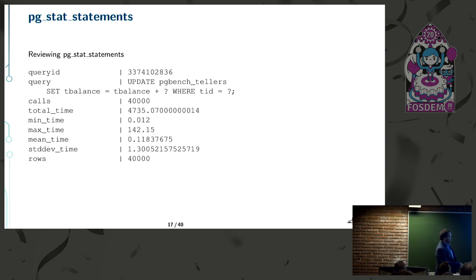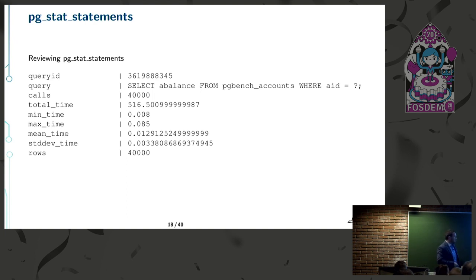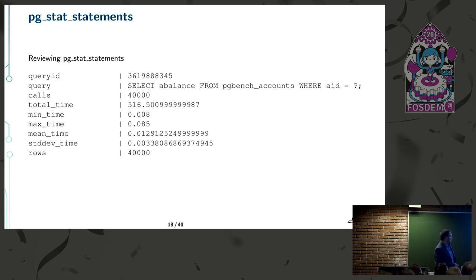Here's another pg_stat_statements example — a select-based query. The total time is only 516 milliseconds across 40,000 calls, which is pretty good. The min and max times are well under a millisecond, and the standard deviation is also quite low. That's the kind of query you'd like to see.